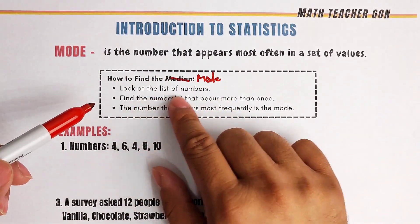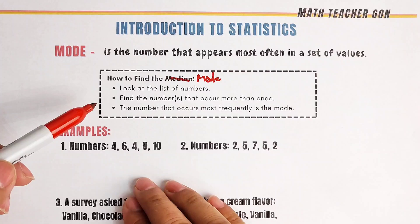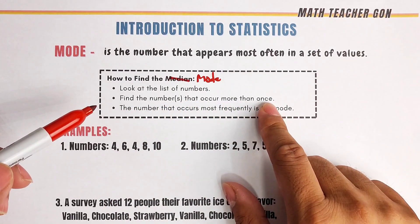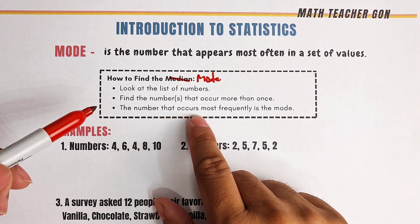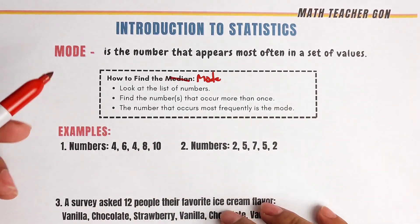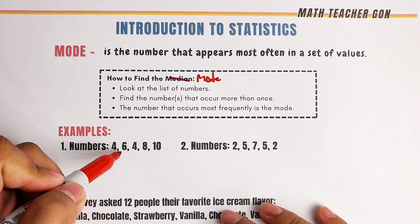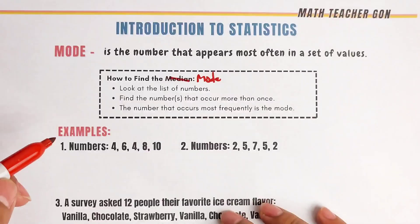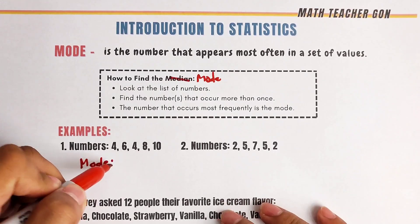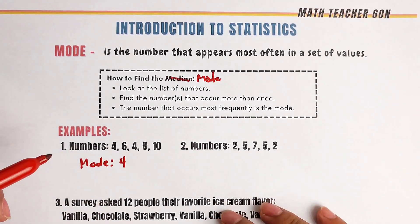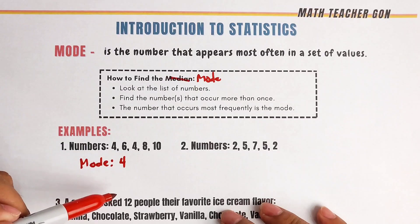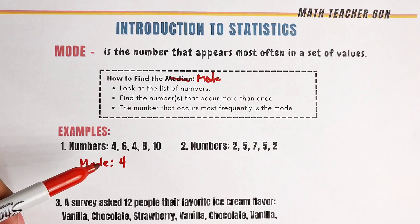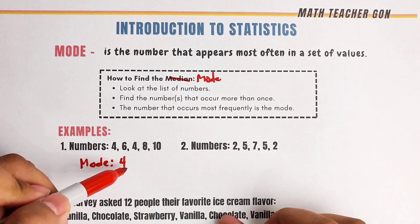How to find the mode: look at the list of numbers, find the numbers that occur more than once, and the number that occurs most frequently is the mode. So for example, with 4, 6, 4, 8, 10 — the mode is simply 4, because it appears more than the other numbers. It appears twice while 6, 8, and 10 each appear only once. So definitely, 4 is the mode.